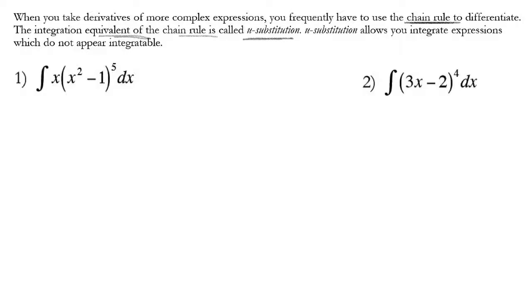Earlier in class, we looked at functions where we have an exponent, and we multiplied out the actual function. That's reasonable to do if your exponent is 2, but when you start getting larger exponents, that's really not something you want to do. So what we're going to do is a u-substitution — we're going to replace parts of this integral with another variable. We have to preserve the value of the integral; we're just changing the appearance of it.